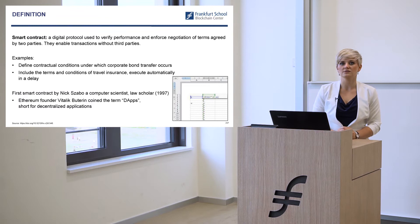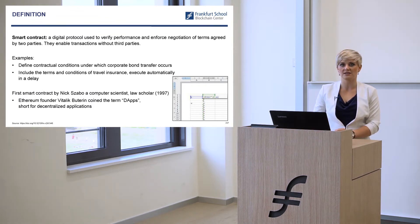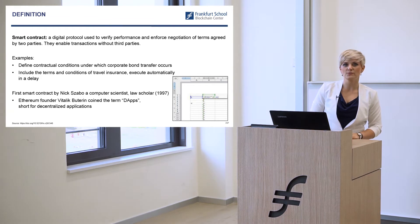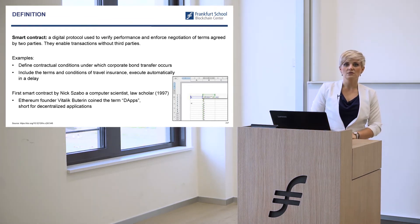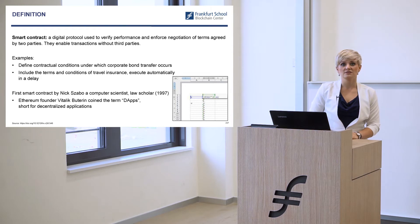You can imagine it like an Excel if-clause: if something happens, then something else will be executed or done. Smart contracts are also not an invention by him — they've been around before. Nick Szabo, a computer scientist and law scholar, wrote about it already in 1997, so it's not new.